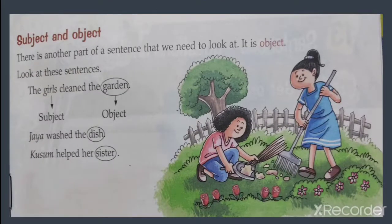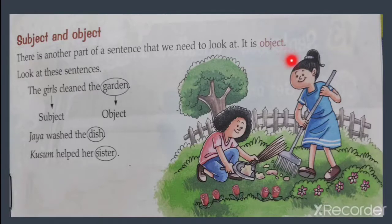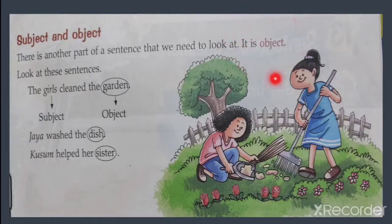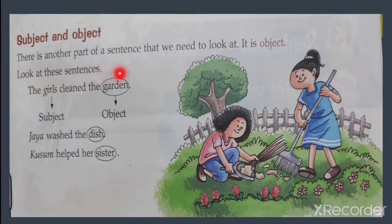Now students, we have to identify what is subject and what is object in a sentence. There is another part of a sentence that we need to look at — it is the object. As we know, our sentence starts with a subject, a noun or pronoun. Now what is an object? The object is the one which receives the action done by the subject, and that noun is known as the object.